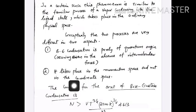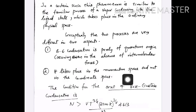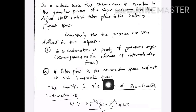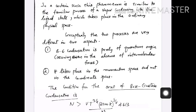Another difference is that Bose-Einstein condensation takes place in momentum space and not in coordinate space, unlike the condensation of vapour into liquid.